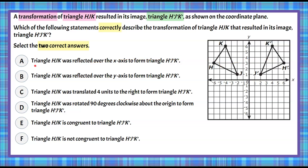Let's begin with answer choice A. Triangle HJK is reflected over the x-axis to form the image. If we use the x-axis as our line of reflection, every vertex must be the same distance on the other side. J is one above, so one below; H is three above, so three below; K is six above, so six below. This reflected image is not H'J'K', so answer choice A is not correct.